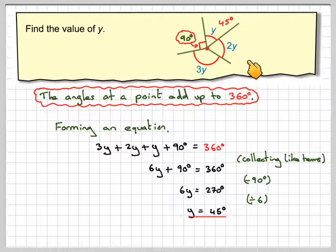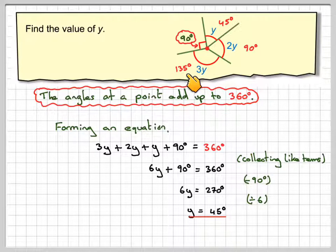So this one is 45. This one's 2 times 45, which is 90, even though it doesn't look it. And this one's 3 times 45, which is 135. If we add 135, 90, 45, and 90, we will get 360.